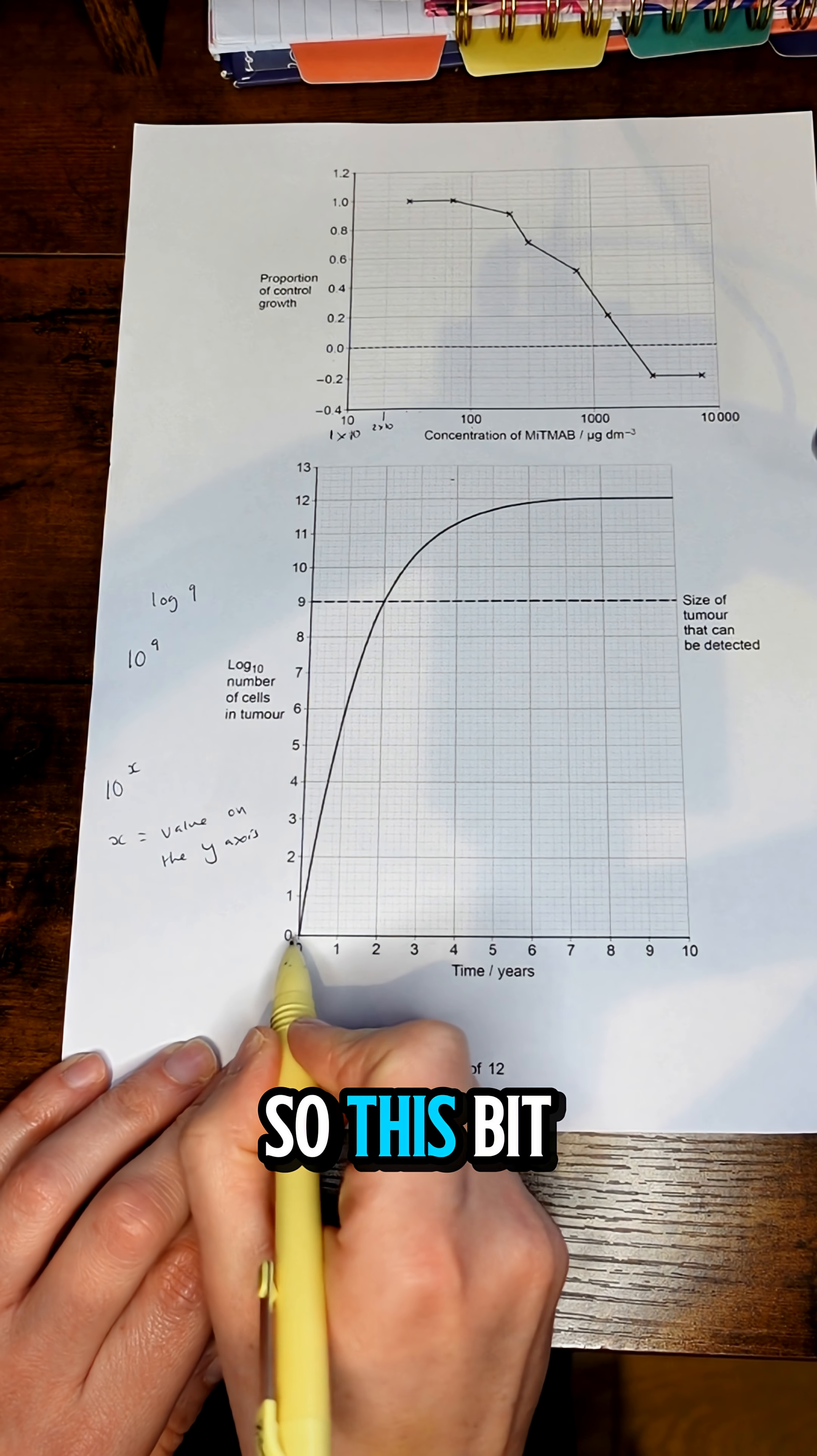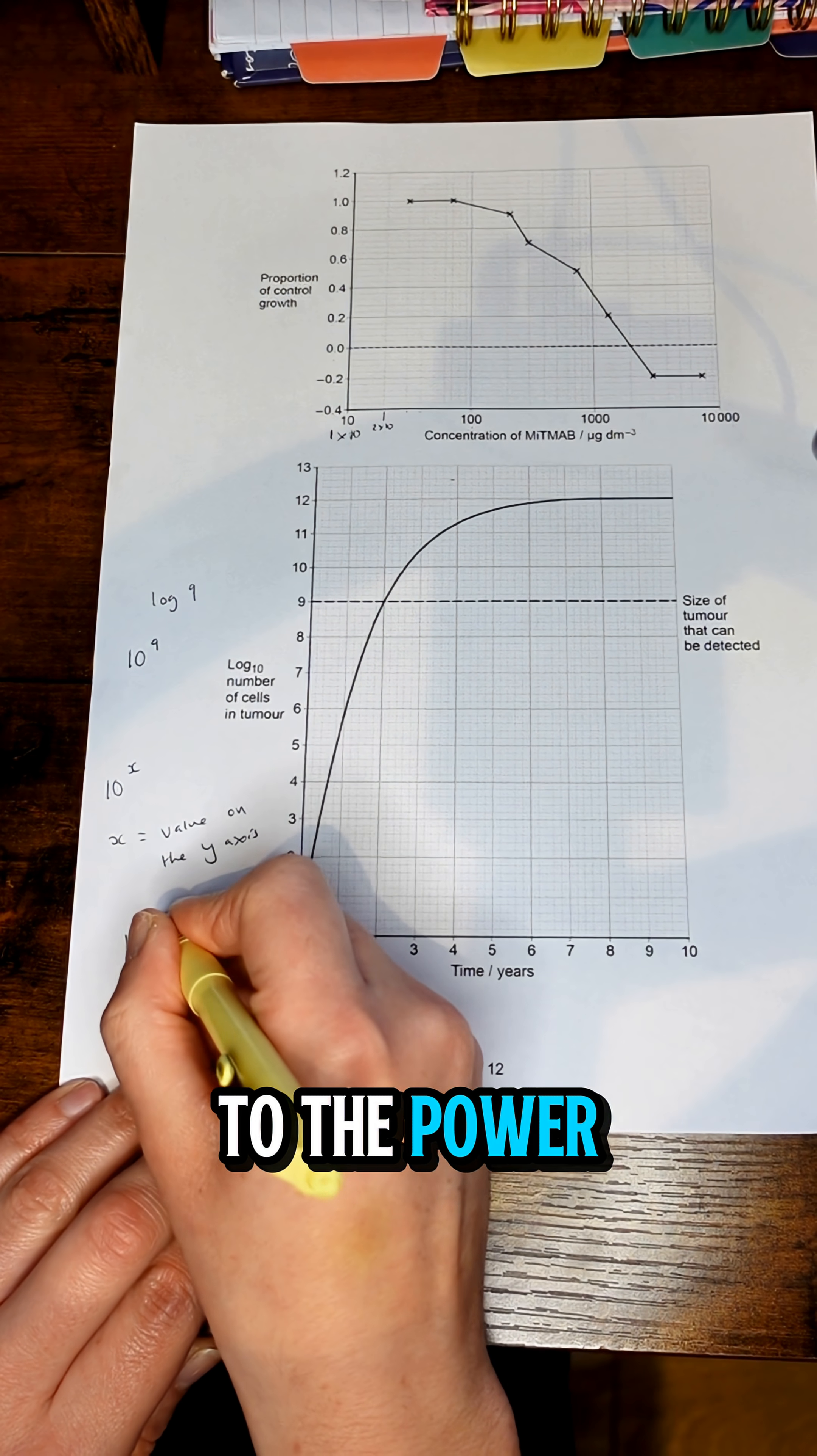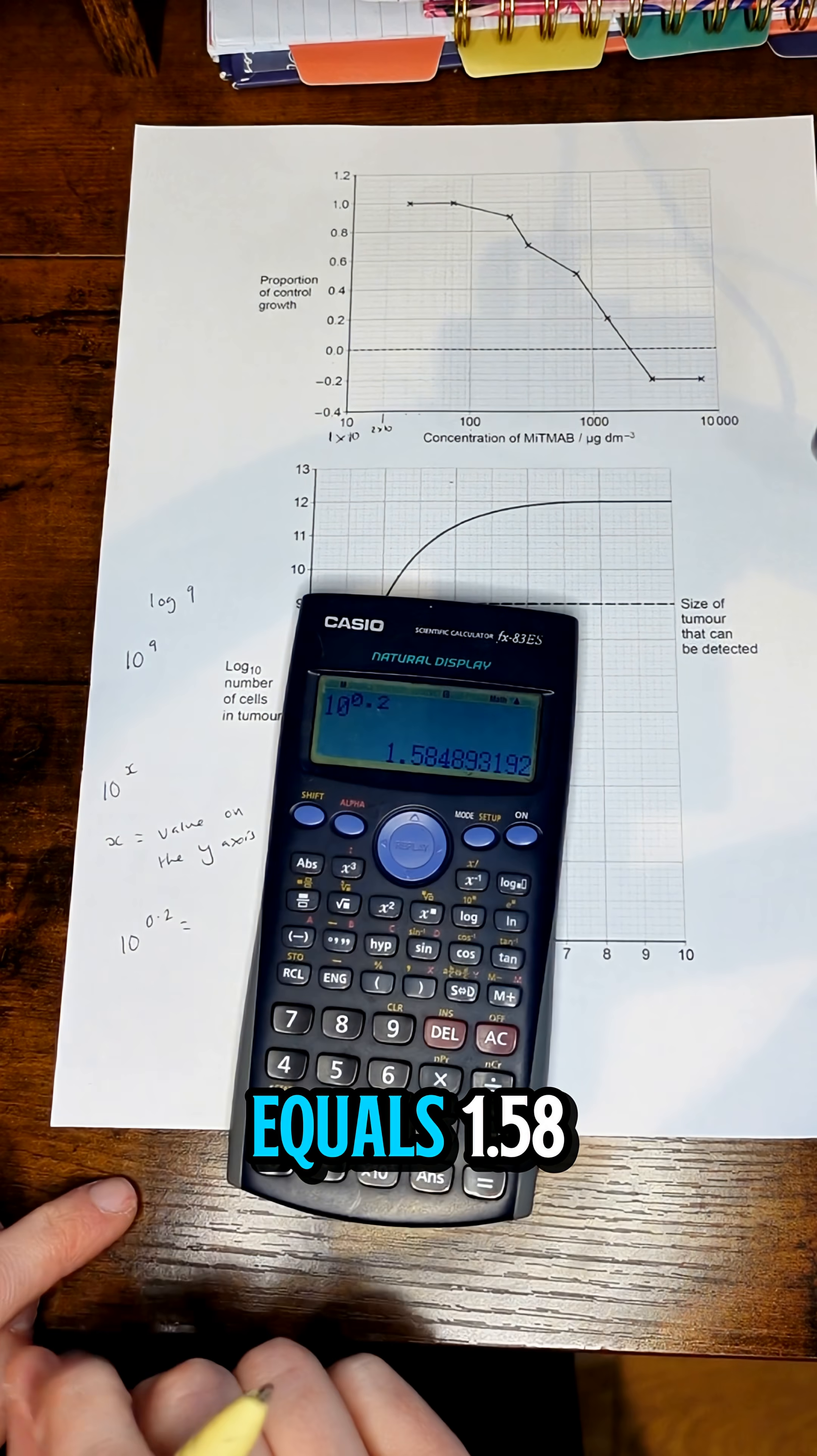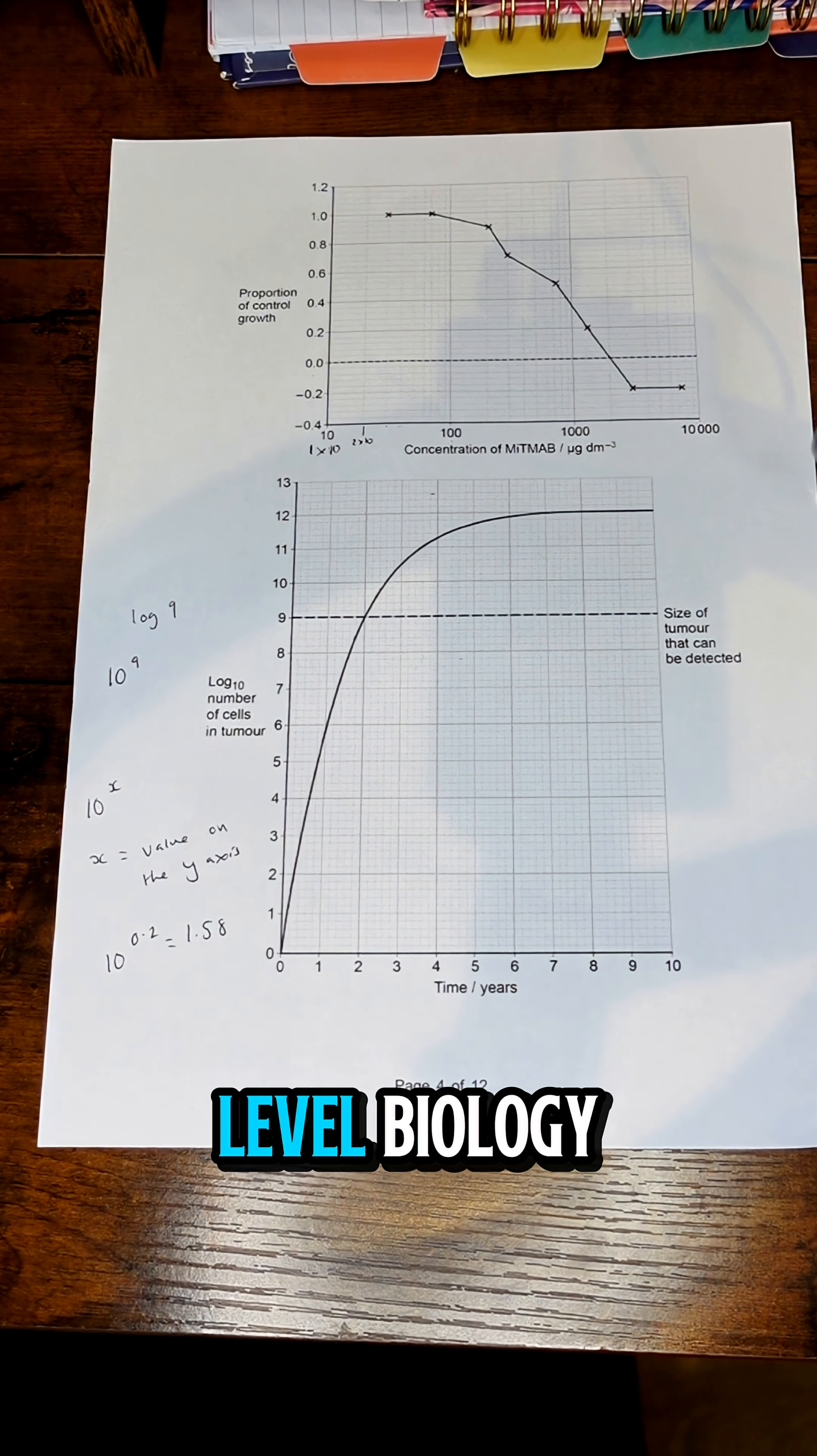So this bit here, let's say that is 0.2, that'd be 10 to the power of 0.2, and that equals 1.58. Follow for more walkthroughs and advice on the most challenging topics in A-level biology.